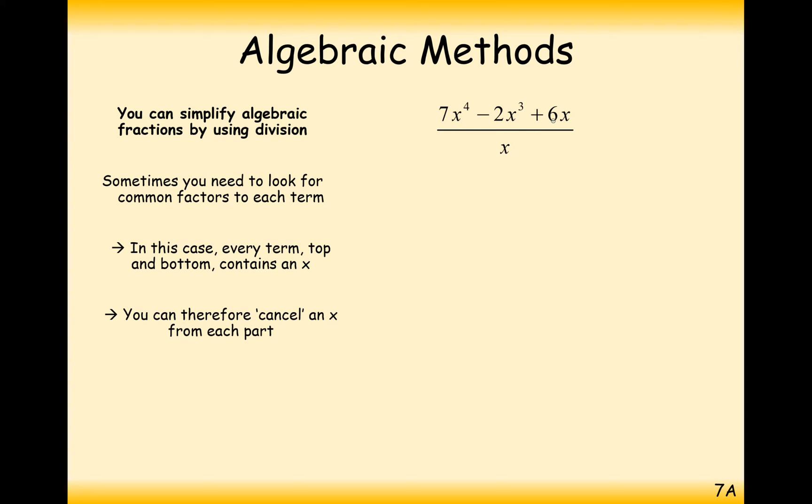So in this expression here, we can't just cancel out one of the x's from the top and the bottom. What we effectively have to do is cancel out a multiple of x from the top and the bottom. So what we have to do first is cancel out an x in each of the terms to get this term here.